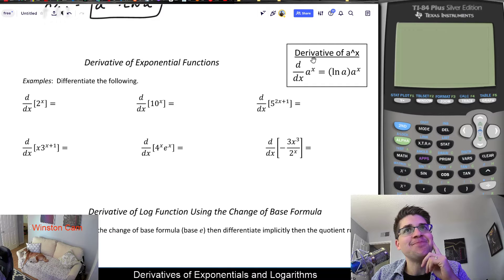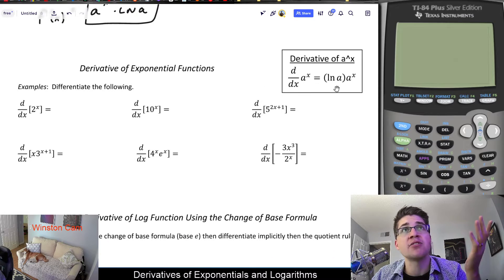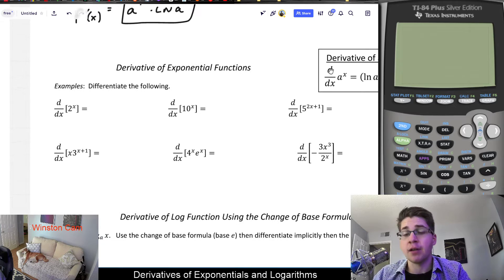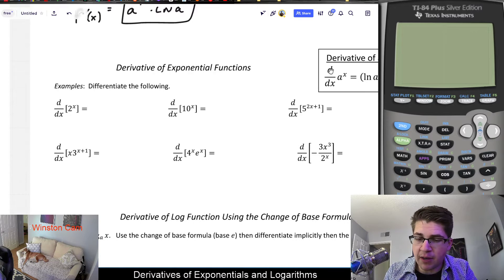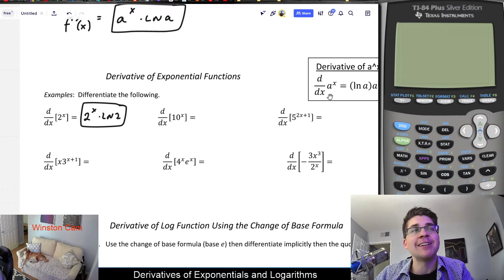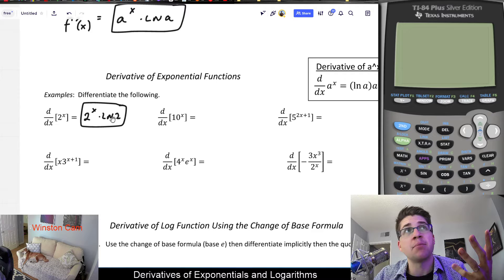But anyways, we would have natural log of a times a to the x. I wrote it backwards from how I wrote it up here, but it doesn't really matter. It's just those two things are multiplied by commutative property. It doesn't matter which way to write it. So I would generally write 2 to the x multiplied by ln 2.